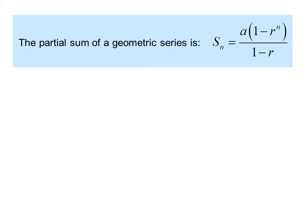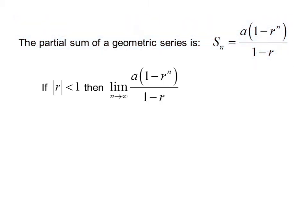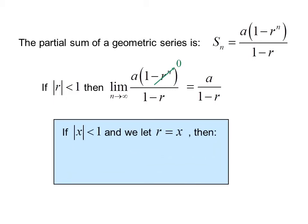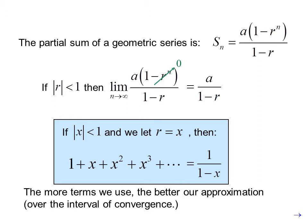The partial sum of a geometric series is s sub n equals a times one minus r to the n, over one minus r. If the absolute value of r is less than one, then when we take the limit as n goes to infinity of a times one minus r to the n over one minus r, r to the n approaches zero and we get a over one minus r. If the absolute value of x is less than one and we let r equal x, then we have the series one plus x plus x squared plus x cubed plus dot dot dot, which sums to one over one minus x. The more terms we use, the better our approximation over the interval of convergence.